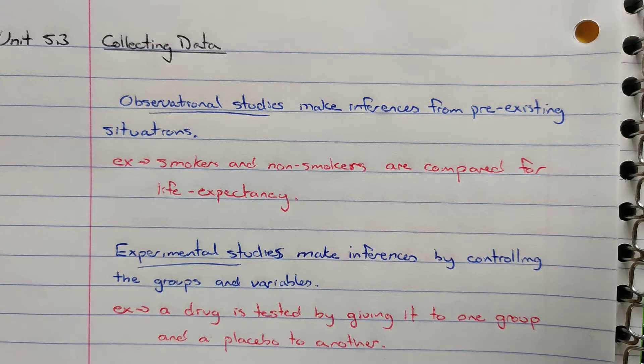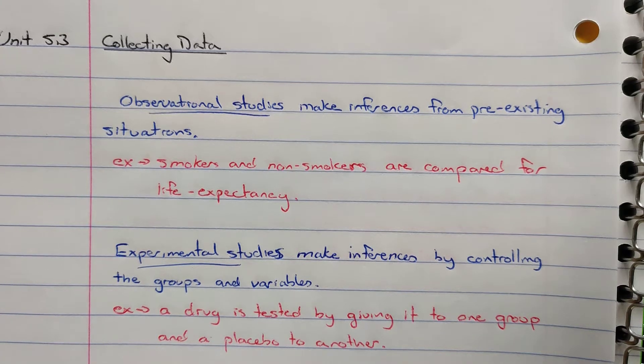In the observational study we're not controlling the smokers and non-smokers. We're not saying you have to smoke, you don't smoke. We just find people that do and don't smoke and compare their life expectancy. In the experimental study we're actually having people take the drug and other people not take the drug so that we can make an inference based on the control that we have there.